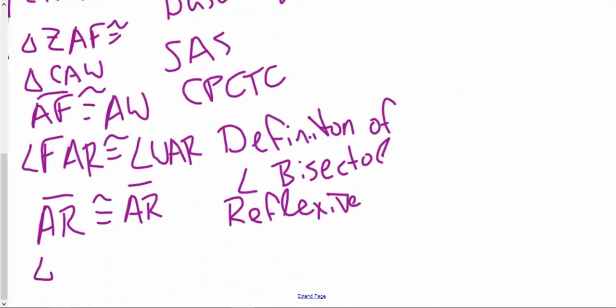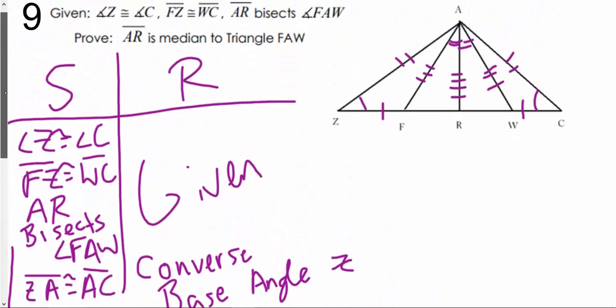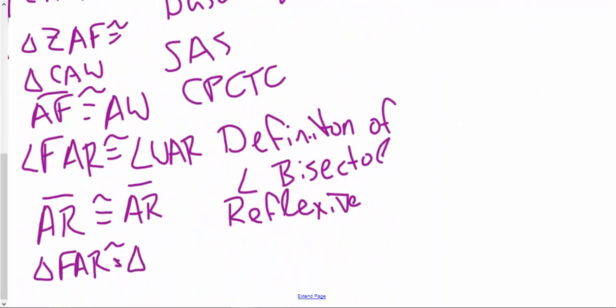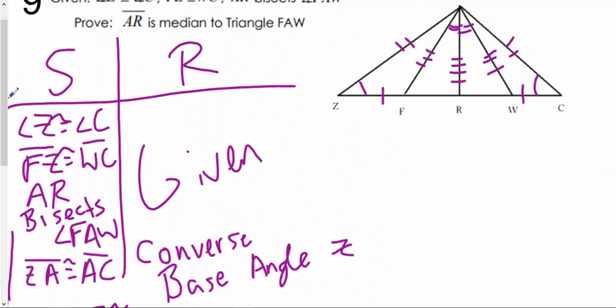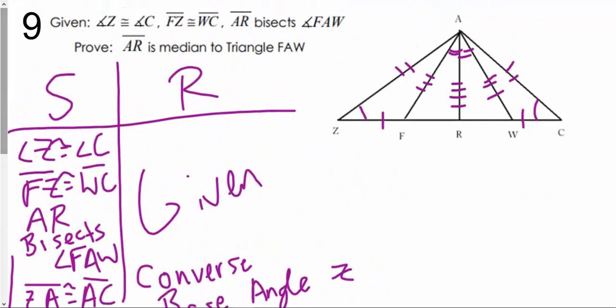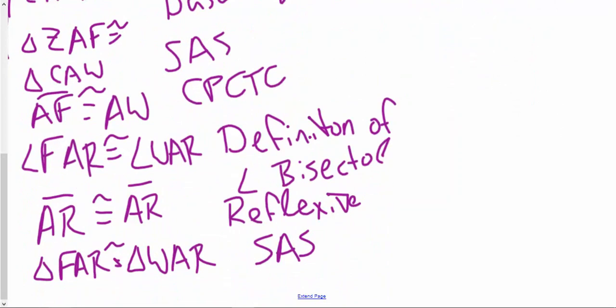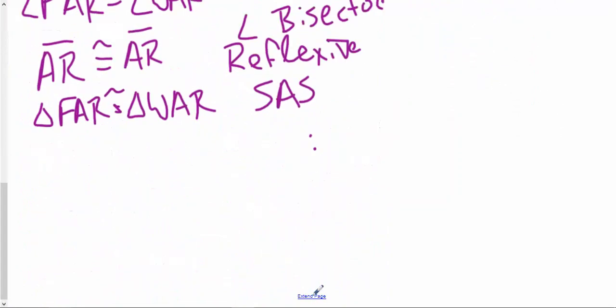So we're going to say triangle FAR is congruent to triangle WAR by SAS. Which is great. So if I have FAR is congruent to WAR, then I'm able to say, and the reason I want to do that is I need to prove R is a midpoint. So if I'm proving R is a midpoint, I can say that FR is congruent to RW by CPCTC.